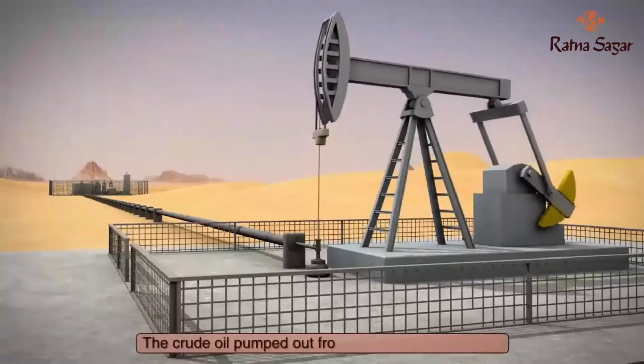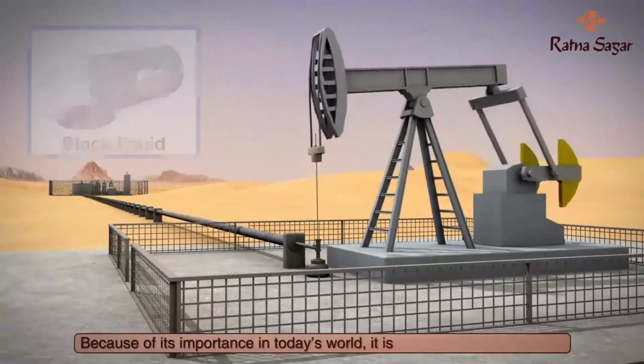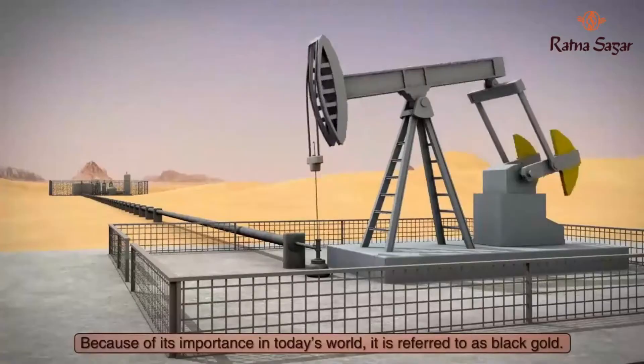The crude oil pumped out from a well is a black liquid. Because of its importance in today's world, it is referred to as black gold.